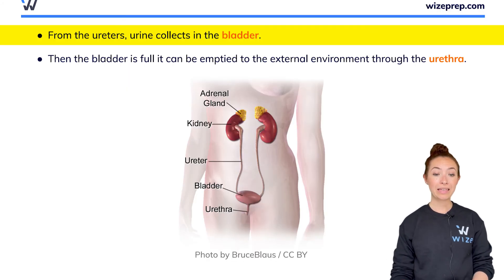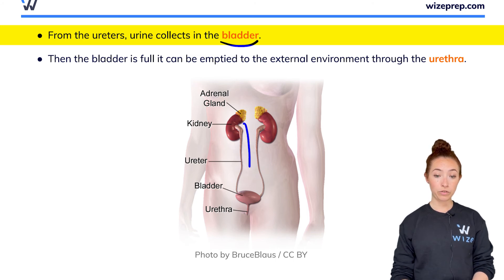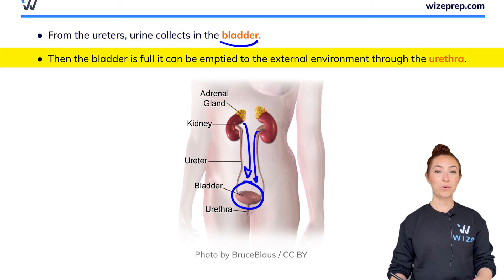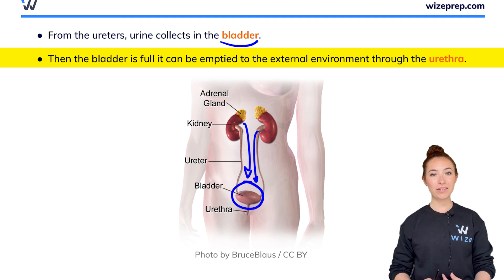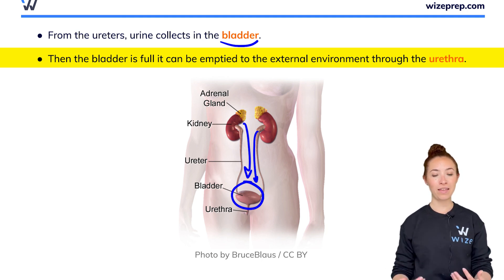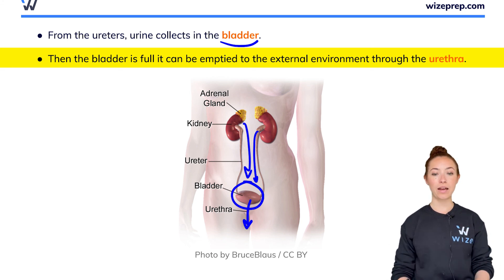From the ureter, the urine is going to collect in the bladder. Both kidneys make urine, it goes from the ureters to the bladder, and here it collects. When the bladder is full, we get that familiar feeling in our abdomen that we have to go to the bathroom, and the urine can come out through the urethra to the outside.